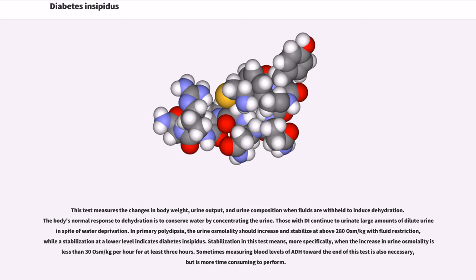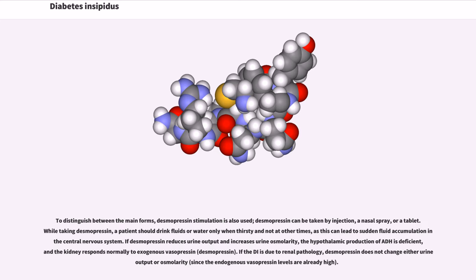Sometimes measuring blood levels of ADH toward the end of this test is also necessary, but is more time consuming to perform. To distinguish between the main forms, desmopressin stimulation is also used. Desmopressin can be taken by injection, a nasal spray, or a tablet. While taking desmopressin, a patient should drink fluids or water only when thirsty and not at other times, as this can lead to sudden fluid accumulation in the central nervous system. If desmopressin reduces urine output and increases urine osmolarity, the hypothalamic production of ADH is deficient, and the kidney responds normally to exogenous vasopressin. If the DI is due to renal pathology, desmopressin does not change either urine output or osmolarity.